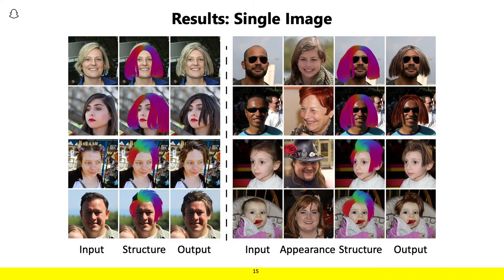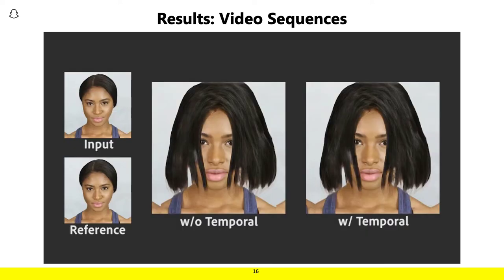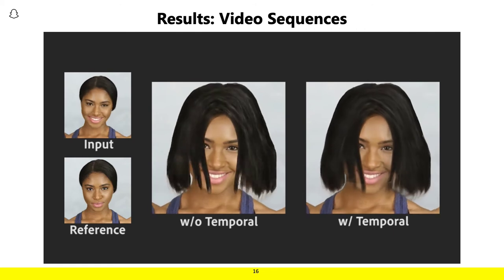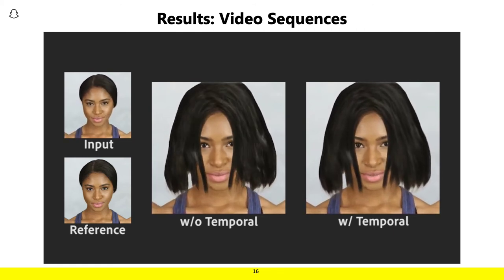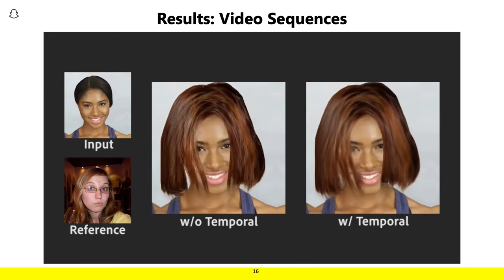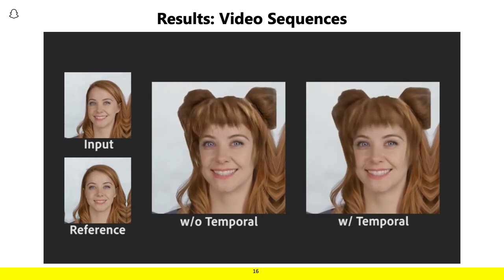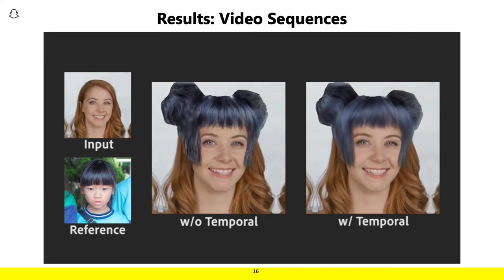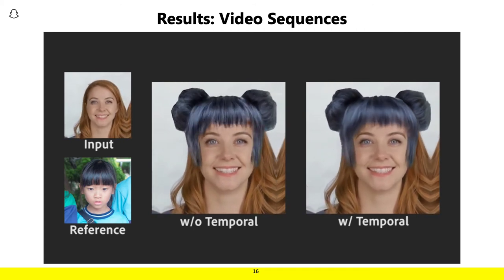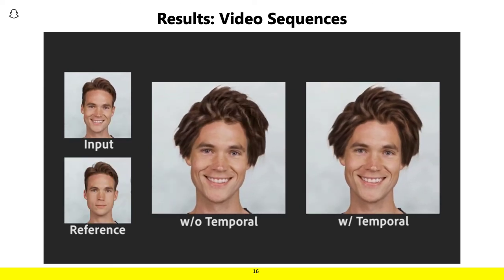Here you see some results obtained from that approach. Given the input image and the structure map rendered on top, you can see output conditioned on that structure, as well as examples where the input is conditioned on the appearance of one image and the structure of another. You can also see example results on a video sequence, both with and without the optional temporal smoothing, showing how this approach allows for synthesizing a wide variety of hairstyles with differing structure and appearance, and how temporal smoothing makes for more consistent renderings across subsequent frames.